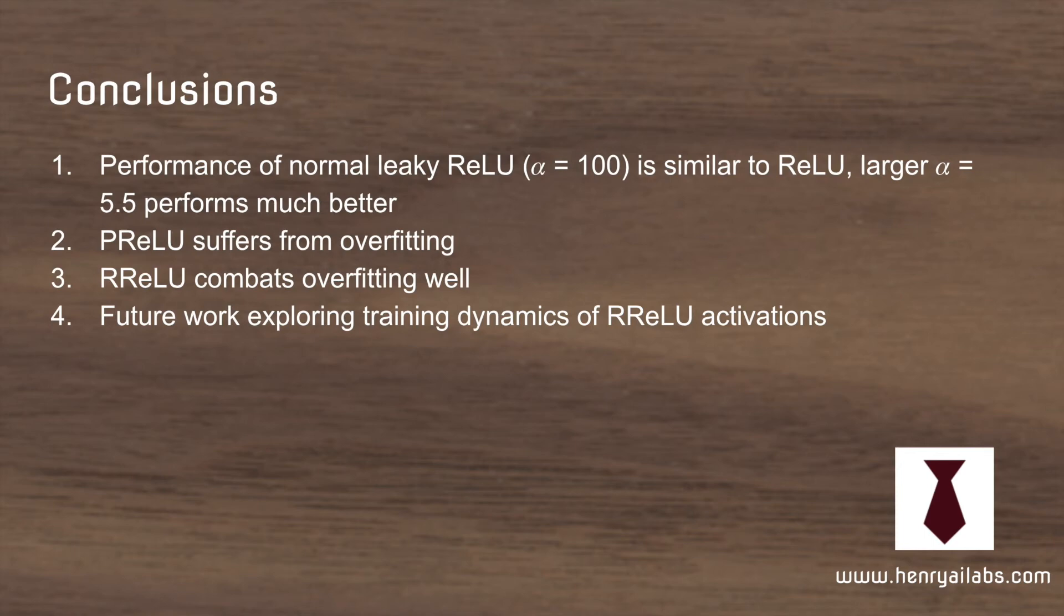They find that parametric ReLU, where you learn the negative slope component, suffers from overfitting. Randomized ReLU was the best one generally, but it's still unclear how this affects the training dynamics of neural networks.